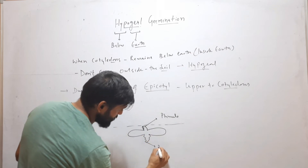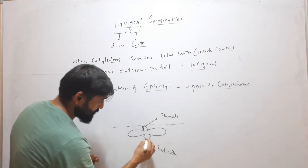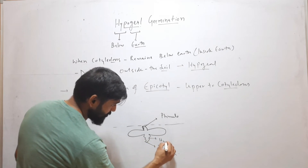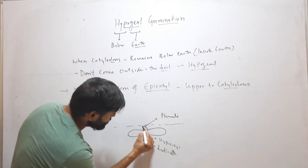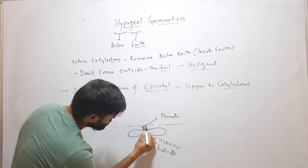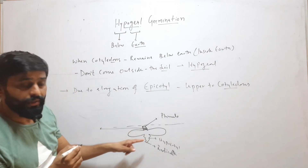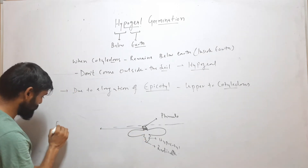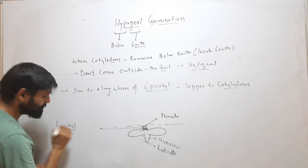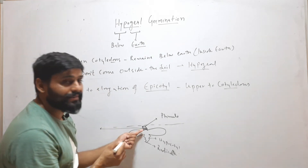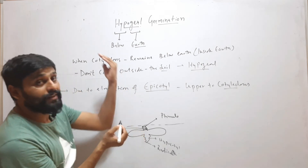Suppose this is the soil, and we have two cotyledons. This is the plumule, this part is the radicle, this part is the hypocotyl, and this part — the part that is present above the cotyledons — is called the epicotyl. When the epicotyl elongates, only the plumule will come out.